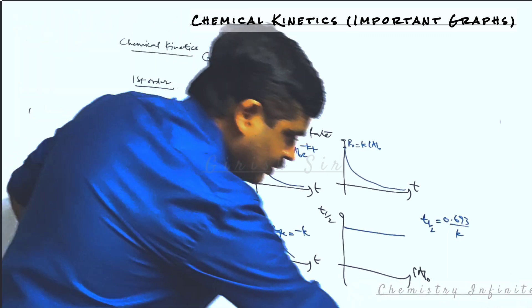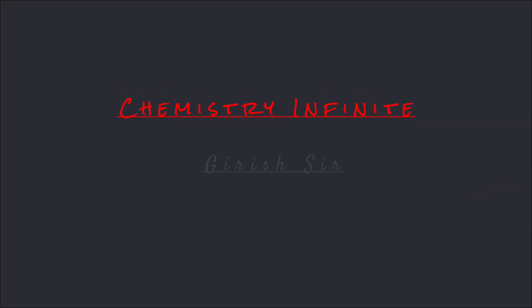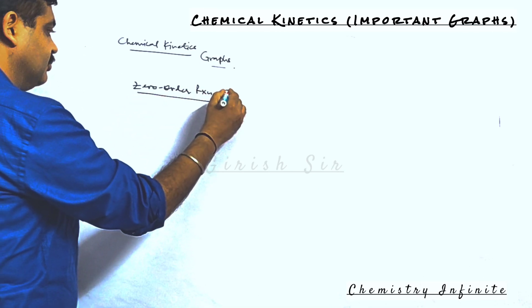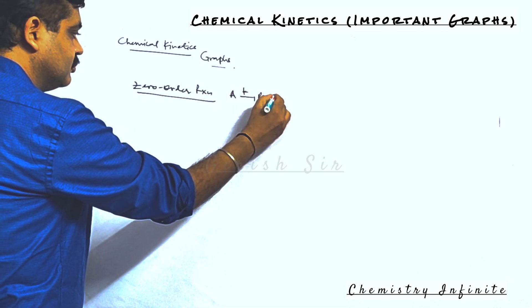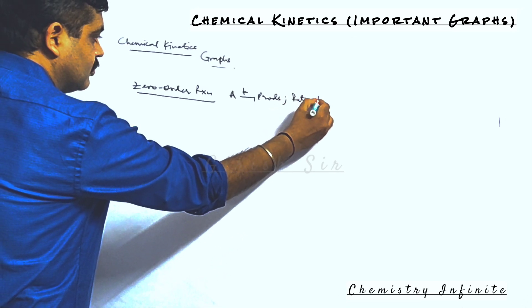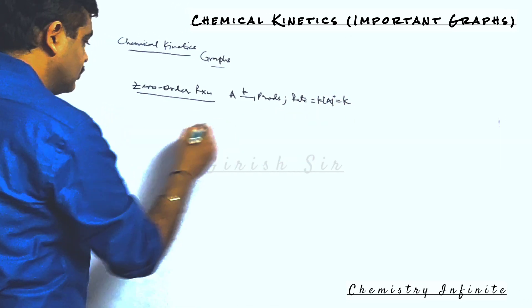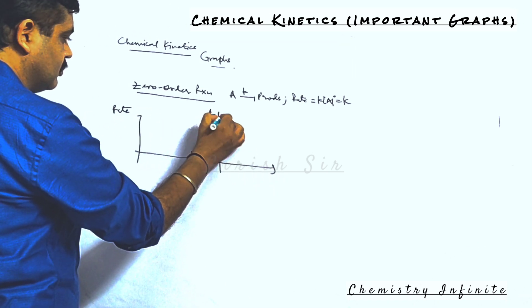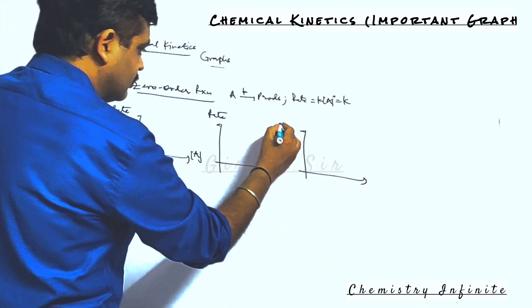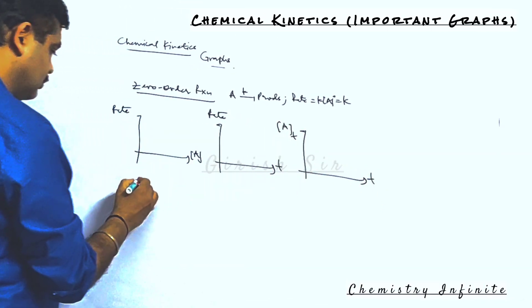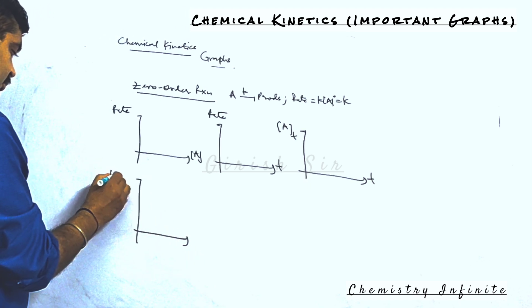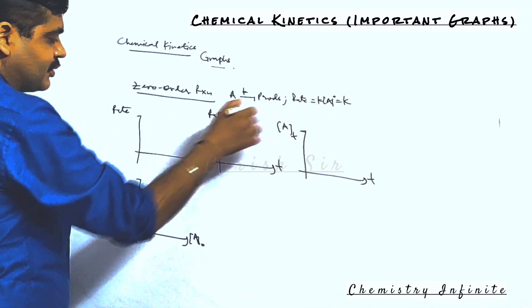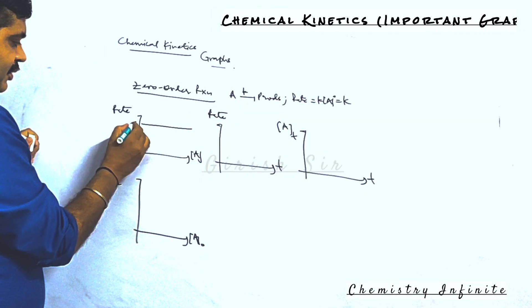Let's move to a zero-order reaction. For a zero-order reaction, rate is constant. This is how the graph will be — a horizontal line with a constant value of k.